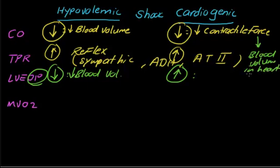In cardiogenic shock, left ventricular end-diastolic pressure is increased because of decreased contractile force. The blood volume in the heart will be increased since the heart cannot pump it out effectively. As a result of increasing volume in the heart, this volume increases the pressure inside the heart and makes it more stretched. So left ventricular end-diastolic pressure will be increased. This is the main difference between hypovolemic and cardiogenic shock.